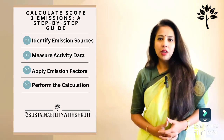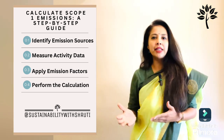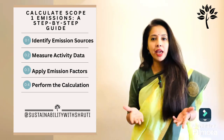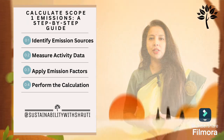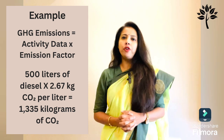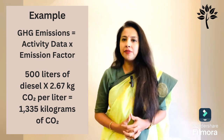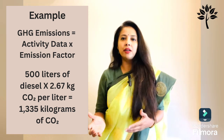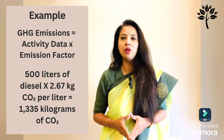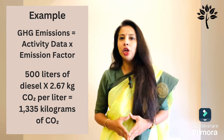Step 4: perform the calculation. Multiply the activity data by the emission factor to get your total emissions. For instance, if your company consumes 500 liters of diesel and the emission factor for diesel is 2.67 kg of CO₂ per liter, your total emissions would be 1,335 kg of CO₂.